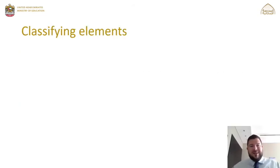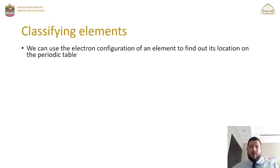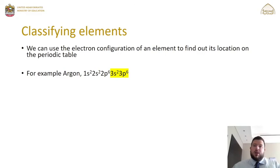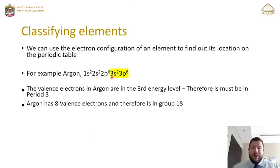Moving on to classifying elements, we can use electron configuration to locate elements on the periodic table. For argon, the electron configuration is 1s² 2s² 2p⁶ 3s² 3p⁶. The valence electrons are in principal energy level 3, so argon must be in period 3. To find the group, count the valence electrons: 2 plus 6 equals 8 total. Therefore, 8 valence electrons means group 18.